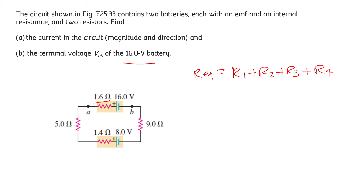After that we can apply Kirchhoff's loop law in the counterclockwise direction. We will assume the current is flowing in the counterclockwise direction. As we apply Kirchhoff's law, we can find the value of current i.